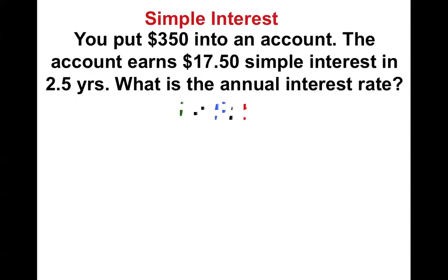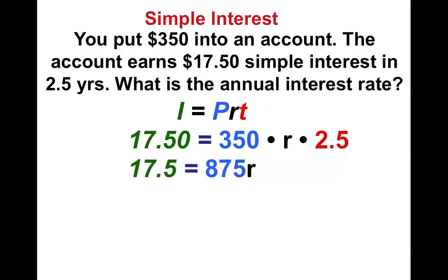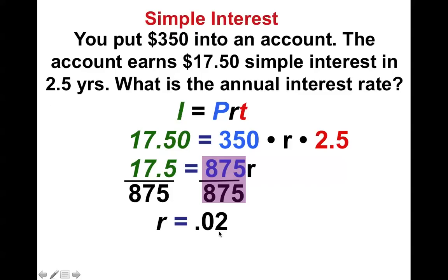Alright, I'm back. Did you get this far? When you multiply you end up getting 875. When you divide you get 0.02, turns out to be nice. With that said, rate needs to be in percentage, so we get an interest rate of 2%.